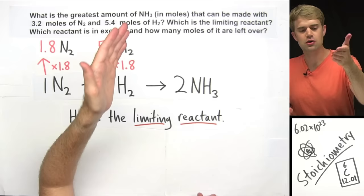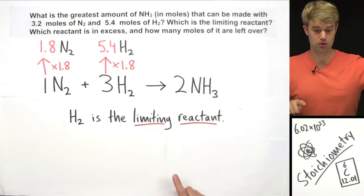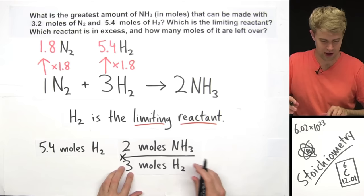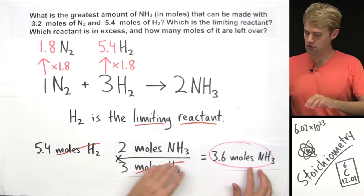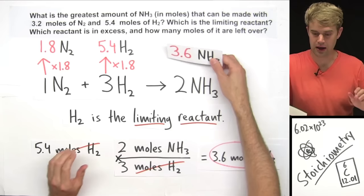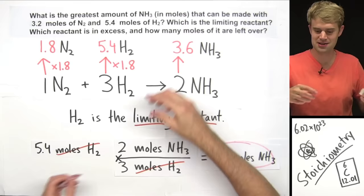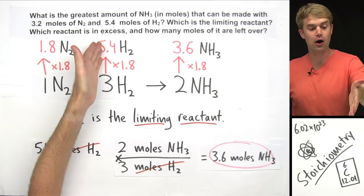Now we want to know the greatest amount of NH3 we can make. We have to start with the limiting reactant, H2, which is 5.4 moles. We multiply by the conversion factor 2 moles NH3 over 3 moles H2. Moles H2 cancels out, and we get 3.6 moles of NH3 — that's the maximum we can make. This is kind of like multiplying by 1.8, and it represents the maximum we can make without running out of any reactant.